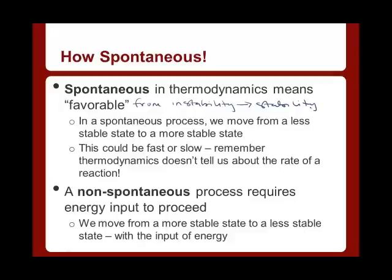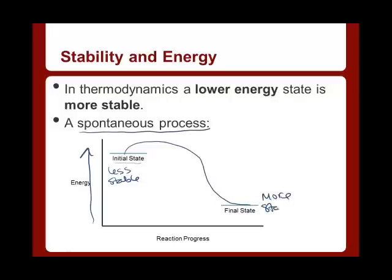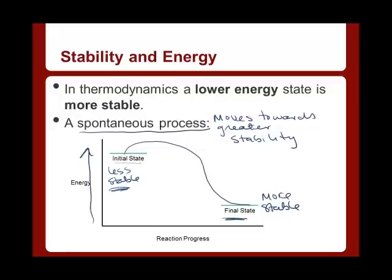A non-spontaneous process is going to be the opposite — it's going to require an input of energy to proceed, because it's not just going to happen on its own. It's going to be moving from a stable state to a less stable state, and in order to do that, we're going to need to input energy. So if we have energy increasing on this axis, a spontaneous process will start at a state of higher energy — which is less stable — and it will move to a state of lower energy, which is more stable. A spontaneous process moves towards greater stability. A non-spontaneous process goes the other way, from more stable to less stable, and we'd have to add energy to get it up there.